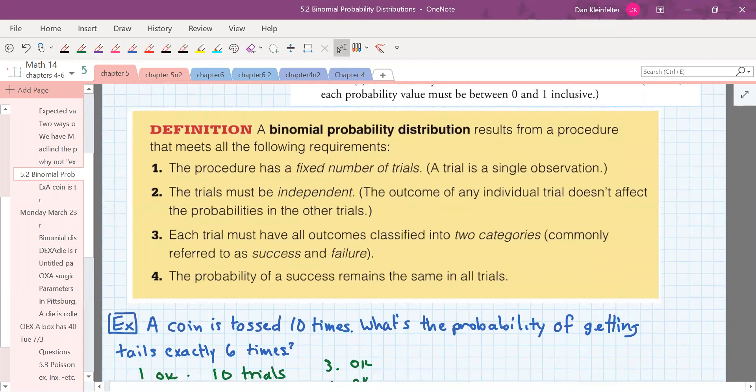Out of all the different kinds of probability distributions you can have, this section 5.2 focuses on binomial distributions, and there's certain requirements for binomial distribution. There have to be a fixed number of trials.